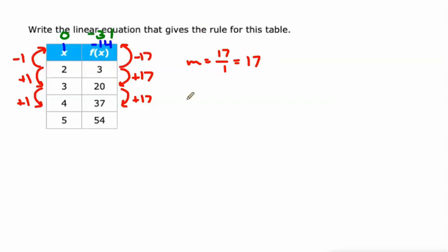Now we could also do this algebraically. That's called numerically. We could use this point here. 3 equals our slope times our x value plus b. y equals mx plus b. Then we can multiply 17 times 2 is 34.